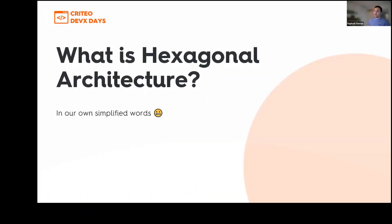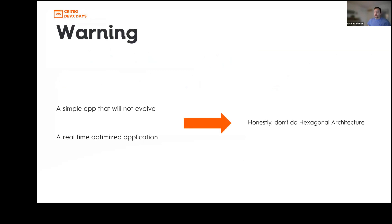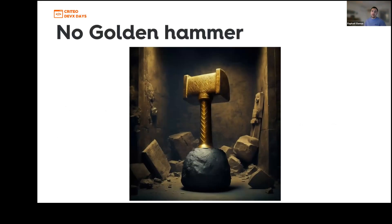So what is hexagonal architecture? Before we start, a small warning: if you are creating a simple app that you already know will not evolve much, or if you need a real-time optimized application, you probably don't need hexagonal architecture — because it will add some abstractions. But in most case scenarios it will help the code not become too complex or too unstable. And of course there is no golden hammer; it's not a solution for every use case.